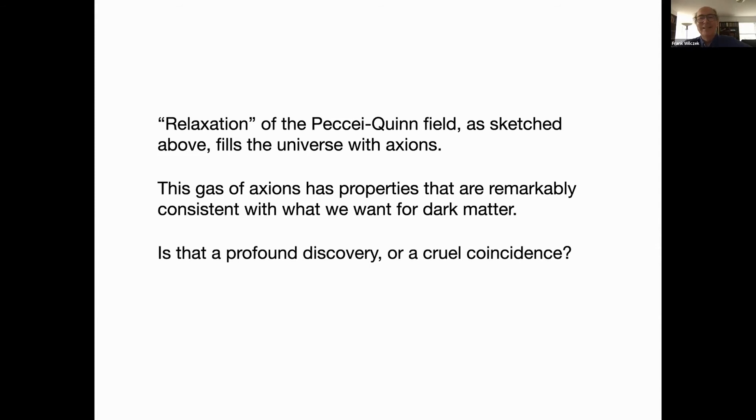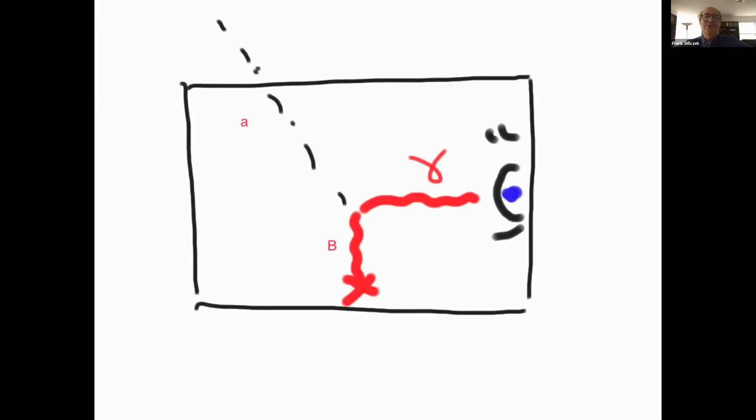So there's, I wouldn't say compelling but strong circumstantial evidence that it's very interesting to consider that axions might be the dark matter of the universe. Or to put it another way, is the fact that these calculations yield a dark matter candidate that came from entirely different considerations a profound discovery about the nature of the universe or just a cruel coincidence? Inquiring minds want to know. And it's not just me, the whole community is engaged with this question, as I'll show you.